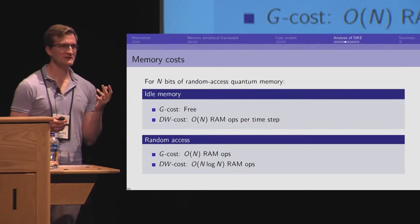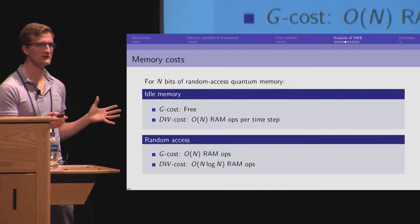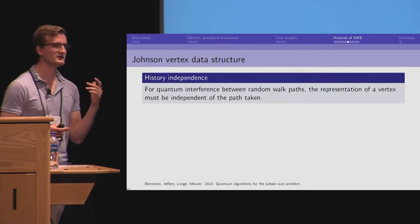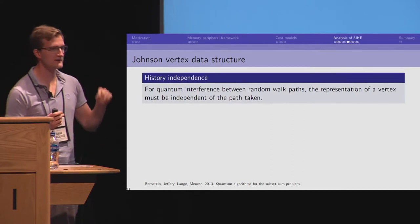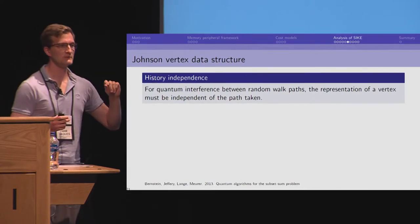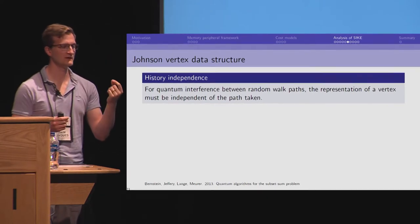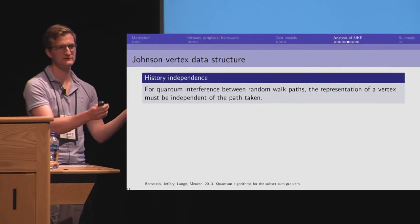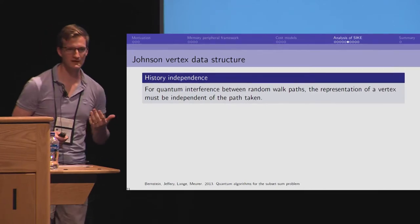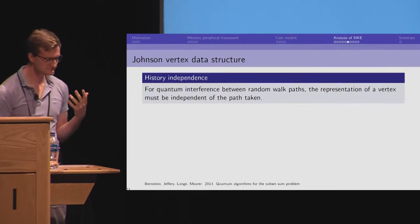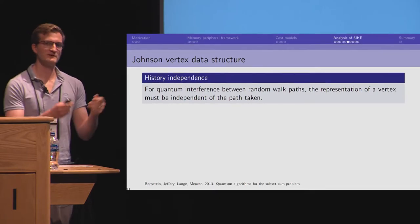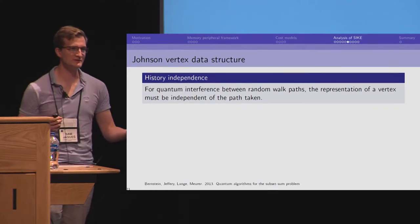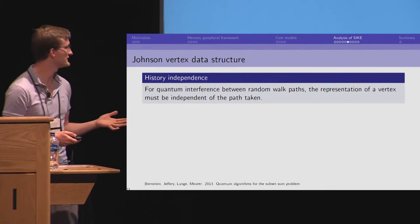But for Tani's algorithm, it's actually even worse because we need some structure to this data to facilitate insertions and deletions. And for quantum algorithms, we need interference. We're doing a random walk on this Johnson graph. And what we need is that for a particular vertex, the representation of that vertex in our quantum computer cannot depend on the path that we took, or else it will not interfere with other paths that led to the same vertex. But on a Johnson graph, a vertex is a set and a path is a sequence of insertions and deletions. So, we need insertions and deletions to lead to the same representation of the data.